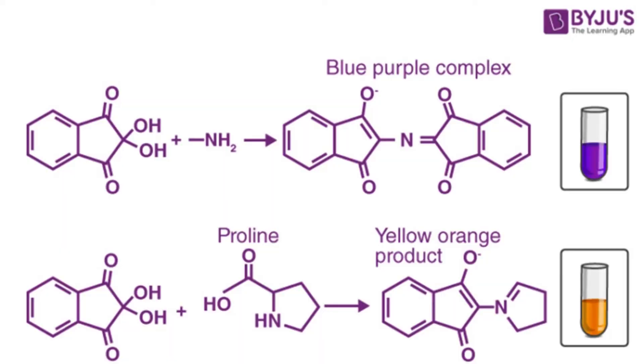If your peptide sequence includes proline, which has a secondary amine, the solution will turn yellow in the presence of a deprotected proline.